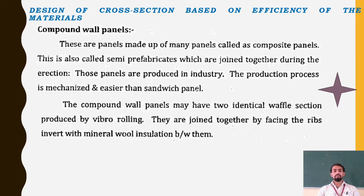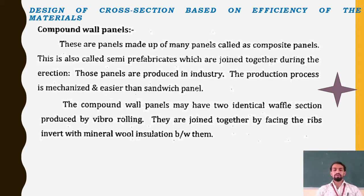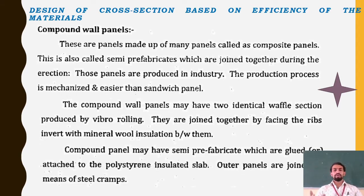The compound wall panels may have two identical waffle sections produced by vibro-rolling, having two different types of connections. They are joined together by facing the ribs inverted with mineral wool insulation between them. A compound panel may also have semi-fabricated parts glued to a polystyrene insulated slab, with outer panels joined by means of steel cramps.